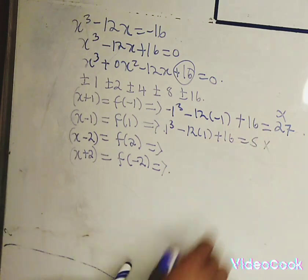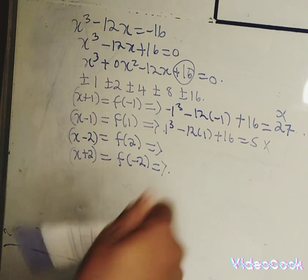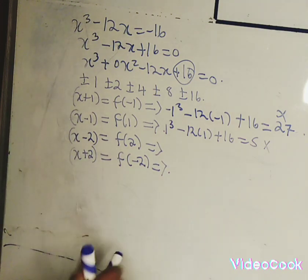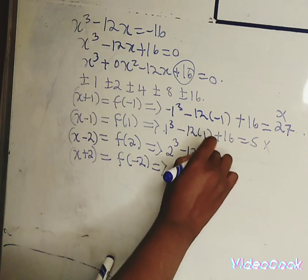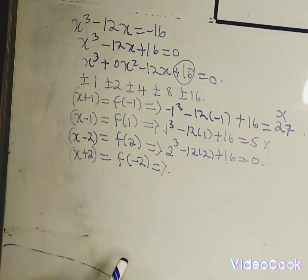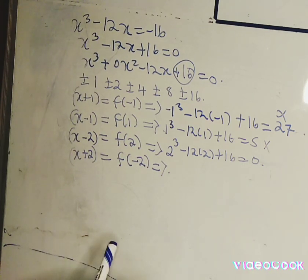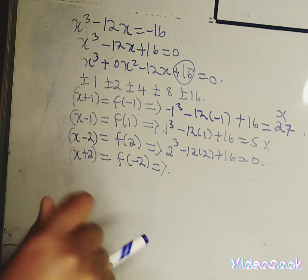When we inject 1: 1 to the power 3 minus 12 times 1 plus 16, we get 5, disqualifying x minus 1 as a factor. Let's try 2: 2 to the power 3 minus 12 times 2 plus 16. If you punch your calculator, you see it gives us 0, so x minus 2 is a factor of this polynomial.